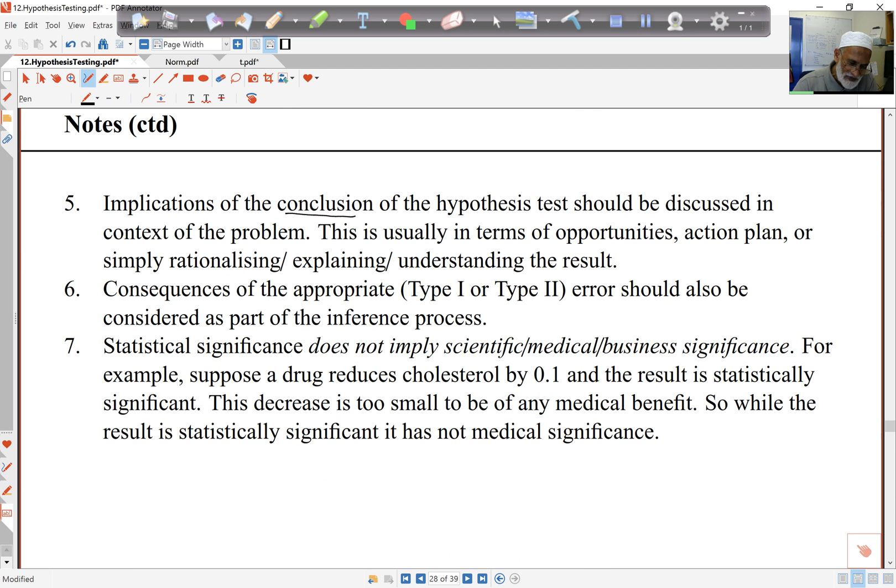Finally, the conclusion must be in terms of context. Don't just say reject or accept. It doesn't make any sense. You must relate this back to the context and the question at hand. So it'll be in terms of some opportunities or action plan or whatever else, some action you have to take, some of the decisions that you have to make. The consequences of types of error must also be discussed, and you'll find this in questions arising, and we'll discuss later on. And finally, statistical significance does not imply scientific or medical or whatever other context-based significance. So for example, if I'm having a look at some kind of drug that reduces cholesterol by 0.1, that may be significant statistically, but there's of no consequence medically. A 0.1 reduction in cholesterol level means nothing at all. So statistical significance does not necessarily imply the context-based significance, and that must be discussed separately.